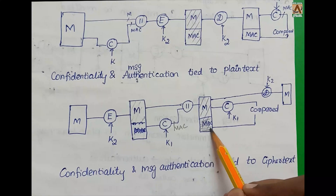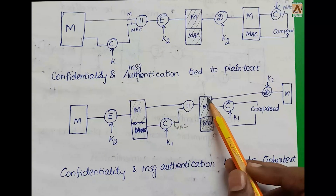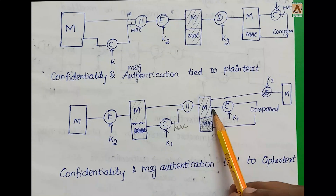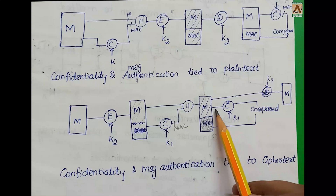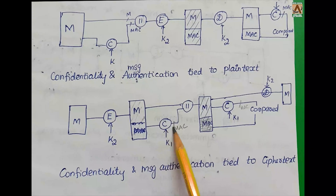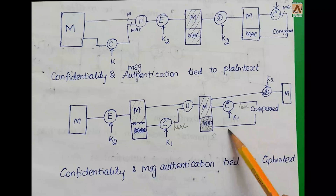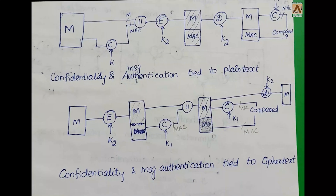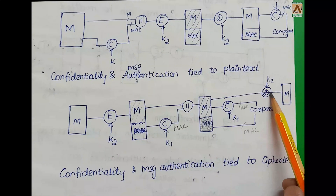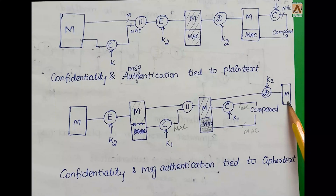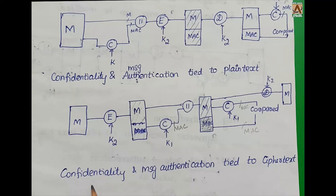The receiver gets the MAC-encrypted message. The MAC is regenerated and compared to verify authentication. Then the message is decrypted using the same decryption key. This diagram represents confidentiality and message authentication tied to ciphertext, meaning authentication is tied to the ciphertext rather than the plaintext.